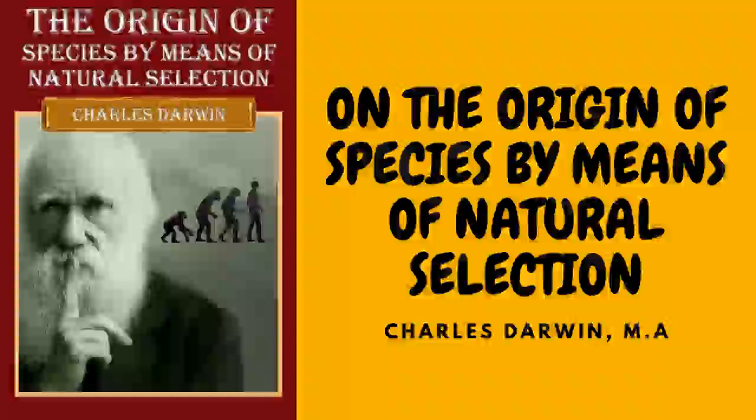But there is not a shadow of evidence in favor of this view. To assert that we could not breed our cart and race horses, long and short-horned cattle, and poultry of various breeds, and esculent vegetables for an almost infinite number of generations, would be opposed to all experience. I may add that when under nature the conditions of life do change, variations and reversions of character probably do occur, but natural selection will determine how far the new characters thus arising shall be preserved.